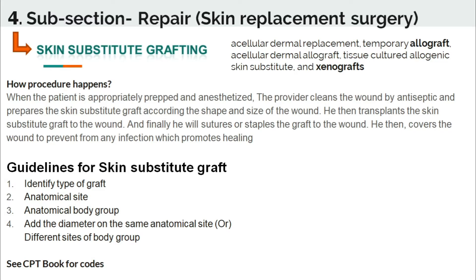After prepping and anesthetizing the patient, the provider cleans the wound with antiseptic and prepares the skin substitute graft according to the shape and size of the wound. He then transplants the skin substitute graft to the wound, and finally sutures or staples the graft to the wound. He then covers the wound to prevent infection.